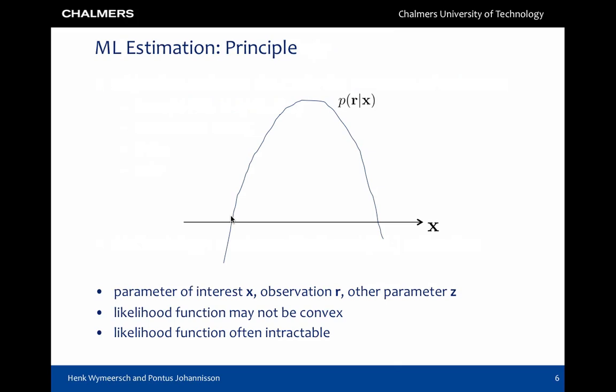Maximum likelihood estimation of a parameter x from an observation r corresponds to finding the maximum of the likelihood function p of r given x. When there are nuisance parameters z, the likelihood function itself is obtained through a marginalization process, which is often complex.